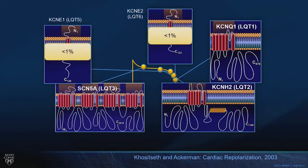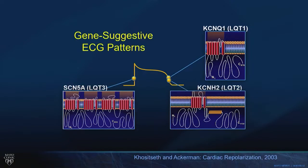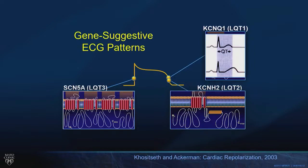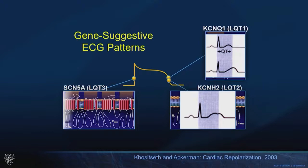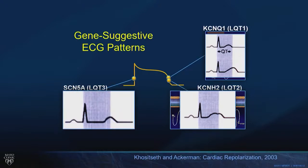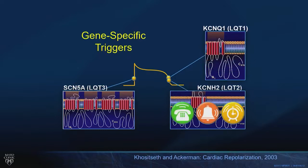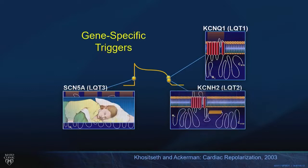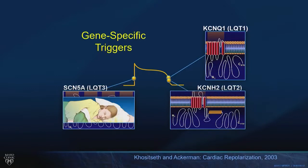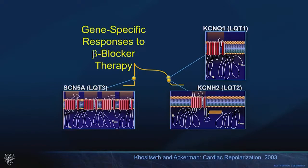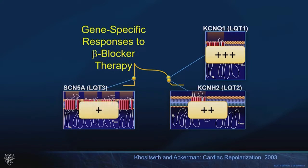There are minor long QT subtypes. Important ECG pattern recognition: broad-based T-waves think LQT1; hump-bump-notch T-waves think LQT2; normal-looking T-waves think LQT3. Gene-specific triggers: event during swimming or running track — think LQT1. Event during auditory triggers, alarm clocks, being spooked — think LQT2. Event in the postpartum period — think LQT2. No particular triggers — think LQT3. Gene-specific responsivity to beta-blocker therapy is clearly present: beta-blockers work great in LQT1, work in LQT2, but not with the same efficacy in LQT3.